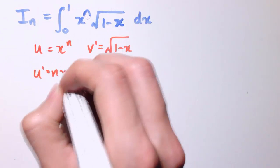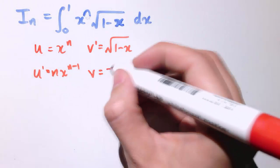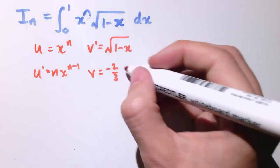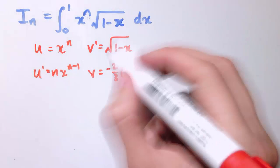u dash is nx to the n minus 1, and v is minus 2 thirds, 1 minus x to the 3 over 2, because it's just a simple reverse chain rule.